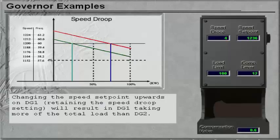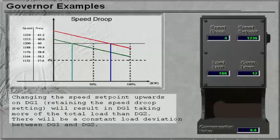Changing the speed set point upwards on DG1 will result in DG1 taking more of the total load than DG2. There will be a constant load deviation between DG1 and DG2.